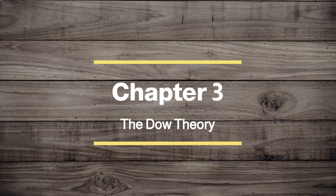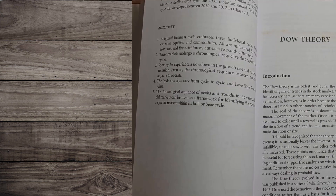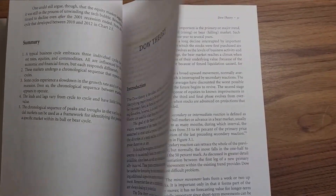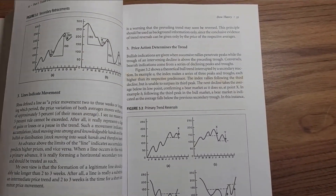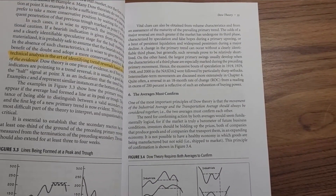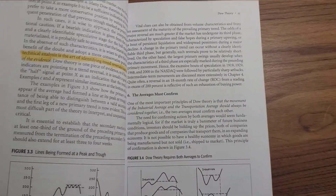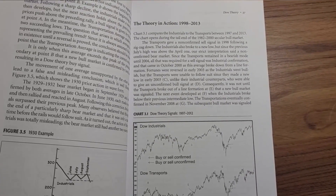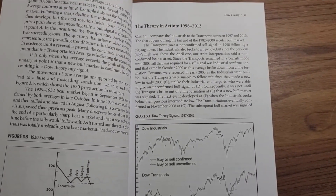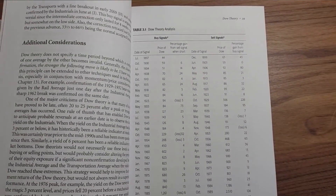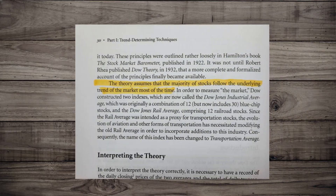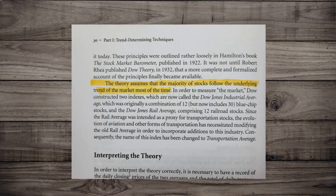Chapter 3. In this chapter, Martin J. Pring introduces us to the Dow Theory, a foundational concept in technical analysis. He breaks down the theory into understandable terms and explains its relevance in today's markets. Understanding the Dow Theory can provide valuable insights into market trends and help you make more informed trading decisions.